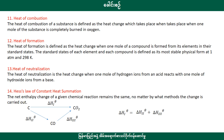For example, carbon (graphite) can react with oxygen to form carbon dioxide directly in one step, or it can proceed via two steps: first carbon reacts with oxygen to form carbon monoxide, and then carbon monoxide reacts further to form carbon dioxide. The net enthalpy change remains the same by either route.